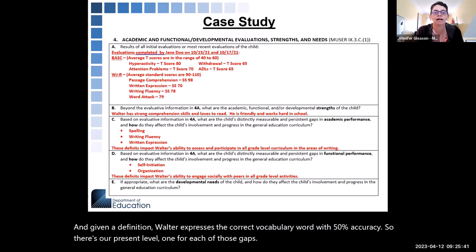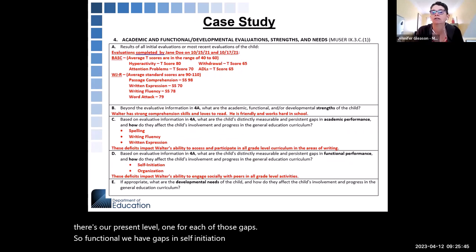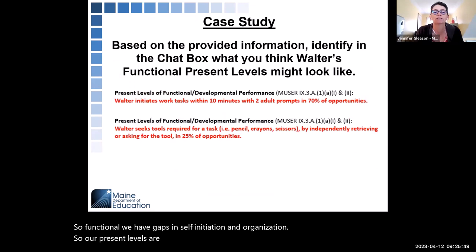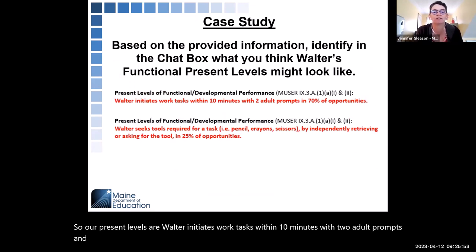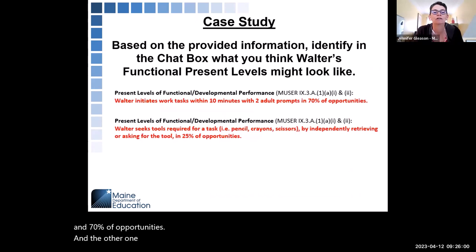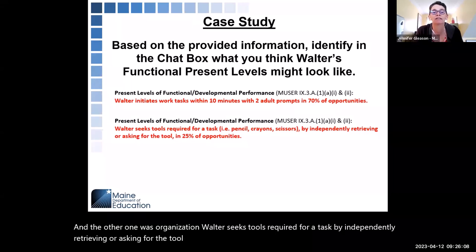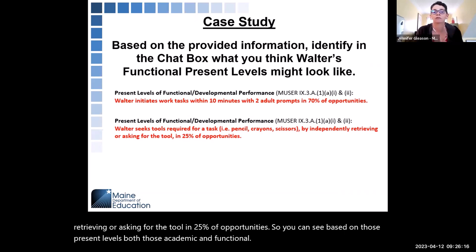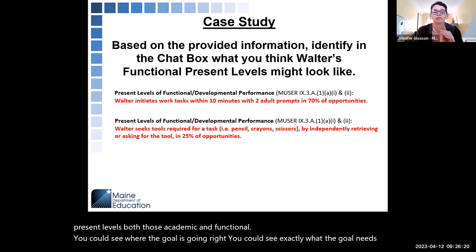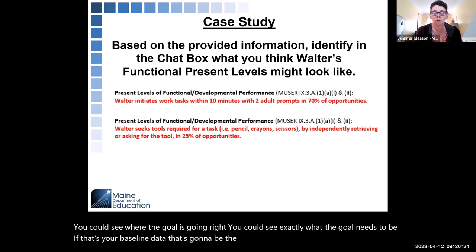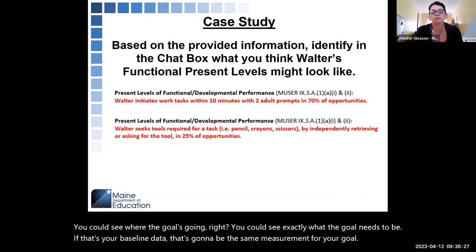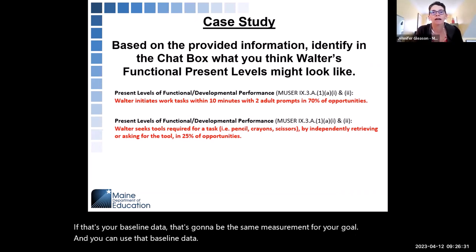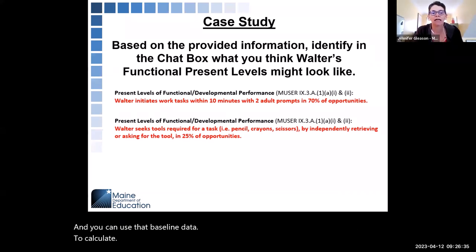For functional, we have gaps in self-initiation and organization. The present levels are: Walter initiates work tasks within 10 minutes with two adult prompts in 70% of opportunities; and Walter seeks tools required for a task by independently retrieving or asking for the tool in 25% of opportunities. You can see, based on those present levels — both academic and functional — exactly where the goal is going. That baseline data will be the same measurement for your goal, and you can use it to calculate what that student can achieve in a year.